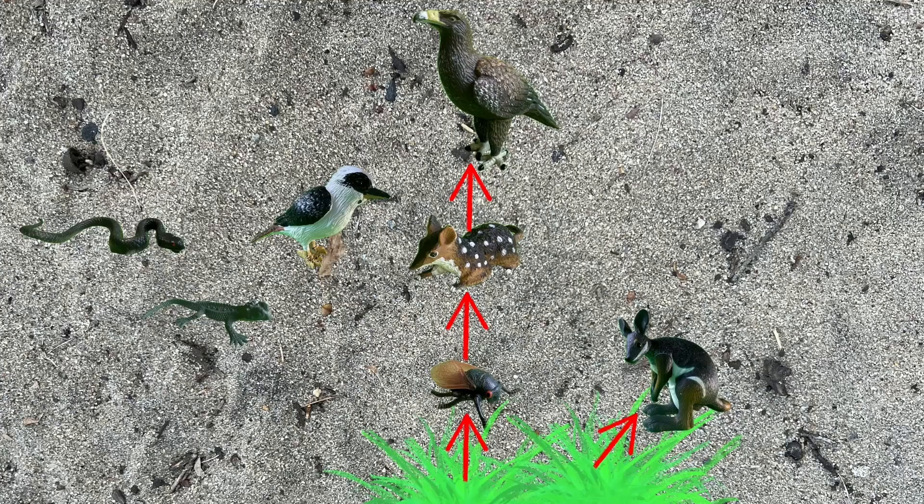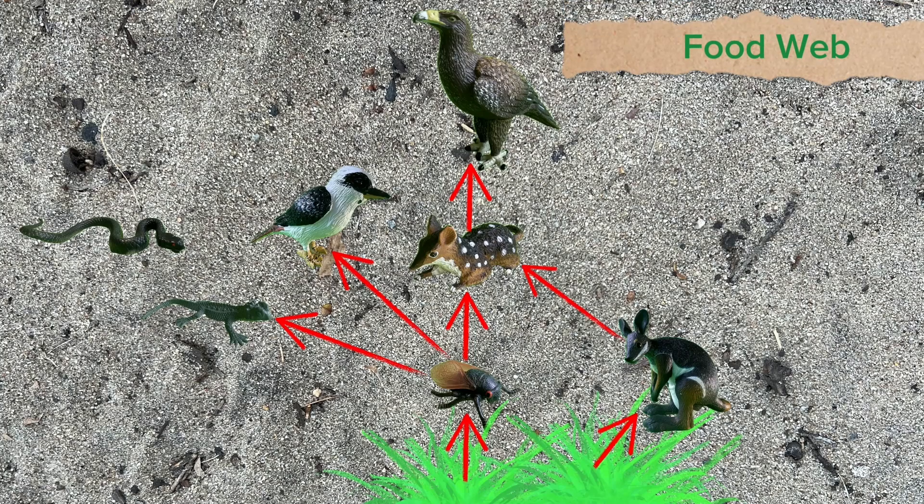But in reality, it's a lot messier than that. Multiple food chains combine to make a food web. That's so intricate.